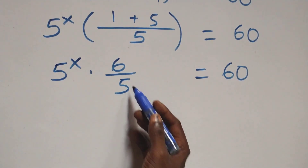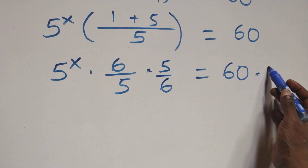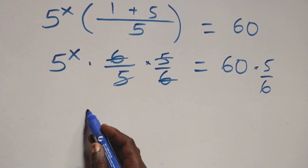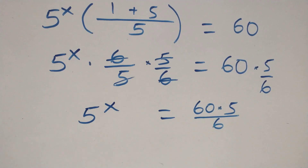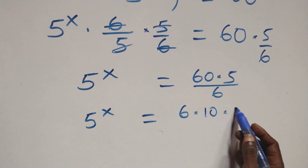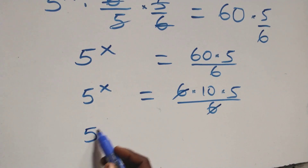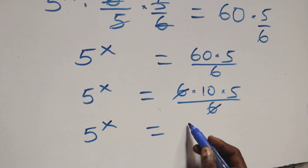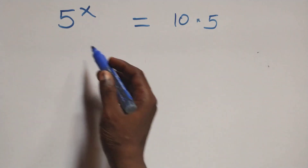To remove the 6 over 5, we multiply both sides by the reciprocal, which is 5 over 6. So 5 raised to power x equals 60 times 5 over 6, which gives us 5 raised to power x equals 50.